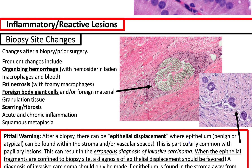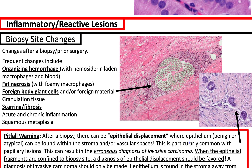Inflammatory reactive lesions: if there are suspicious calcifications on mammography, you get a biopsy. That's going to damage the tissue and there's going to be bleeding. Your body makes a response to that biopsy site. Some of the reactions we can see under the microscope, depending on the time the biopsy is taken, are organizing hemorrhage — where the breakdown of blood will lead to hemosiderin deposits and the macrophages will gobble up the hemosiderin — and fat necrosis, where the macrophages gobble up the dead adipocytes.